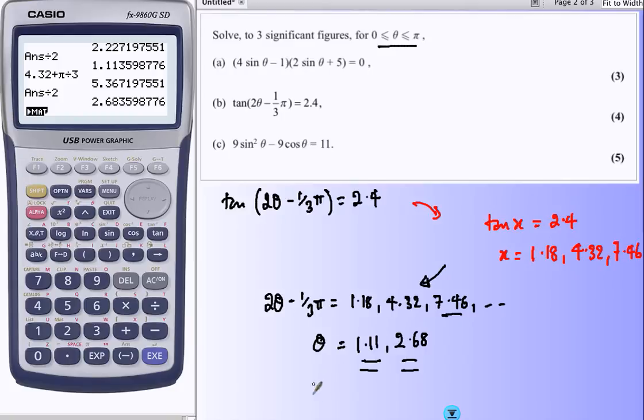So the big tip here is ignore these brackets. Sine, cos, or tan of something horrible. Solve it as a simple equation and simply go back and unravel the bracket. Always done that way. Quick and easy if you do.